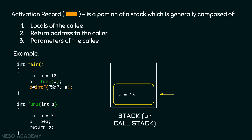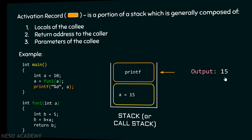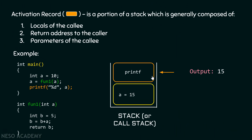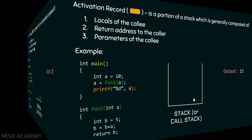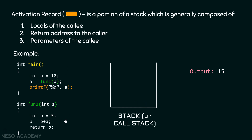After fun1 returns, the compiler calls printf, which prints the output 15 to the console. After printf finishes, control returns to main. Since there are no more statements after printf, main is also popped out of the stack. This is how the whole program works — it prints the output 15 successfully on the screen.